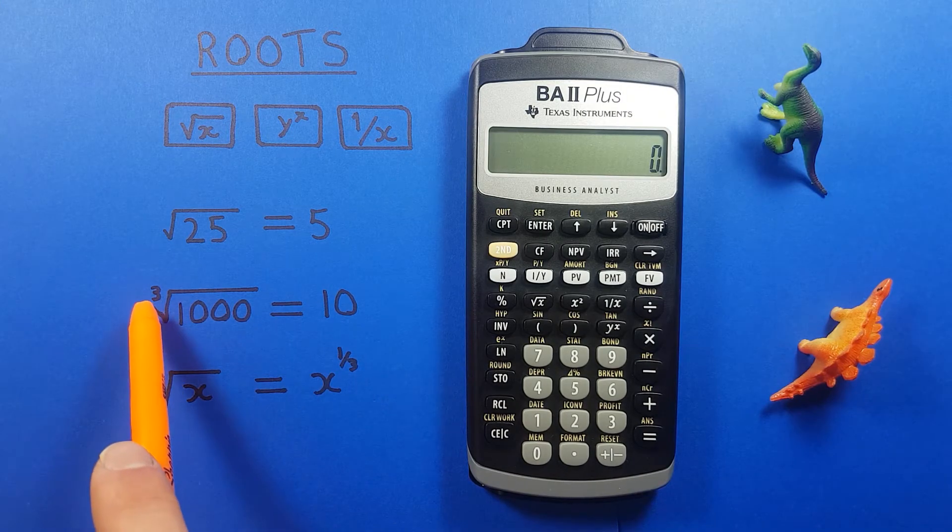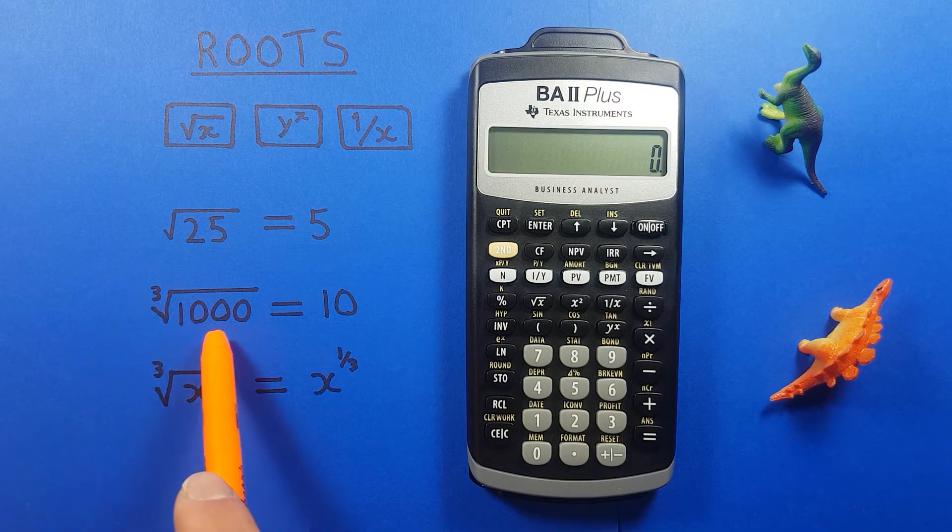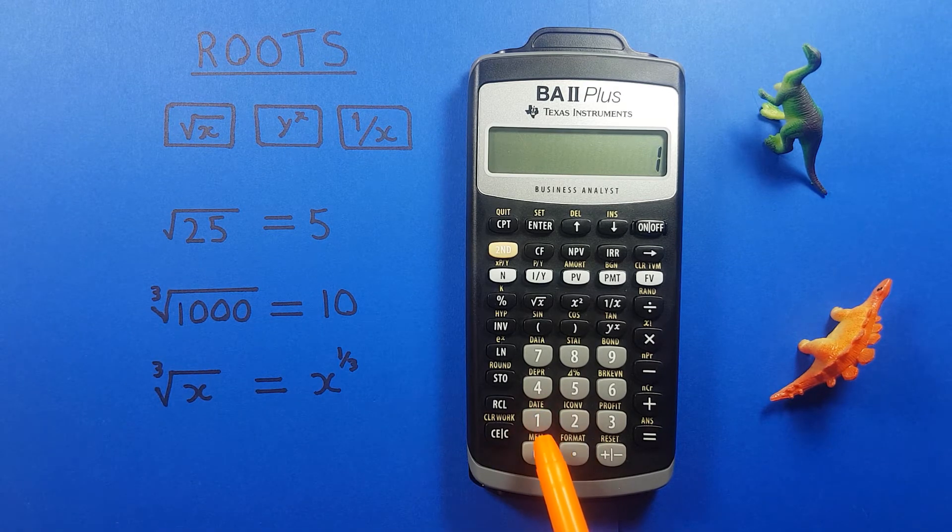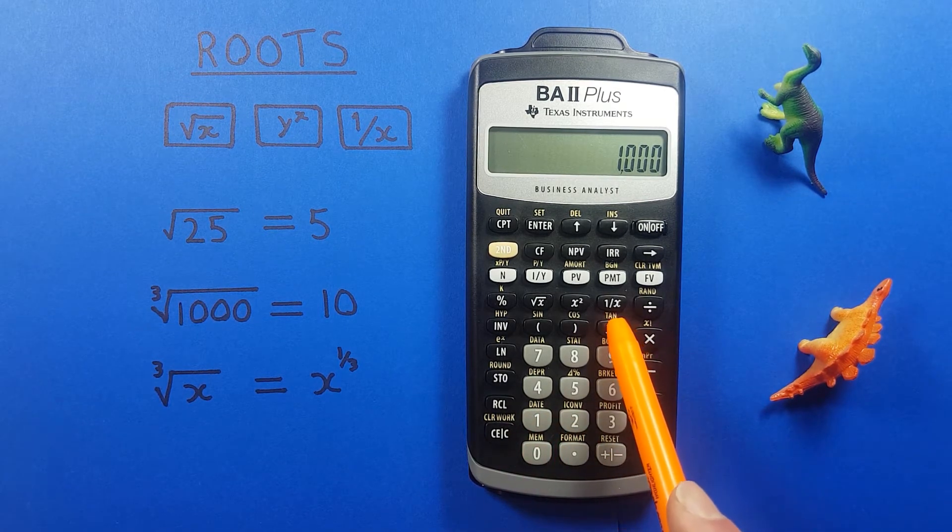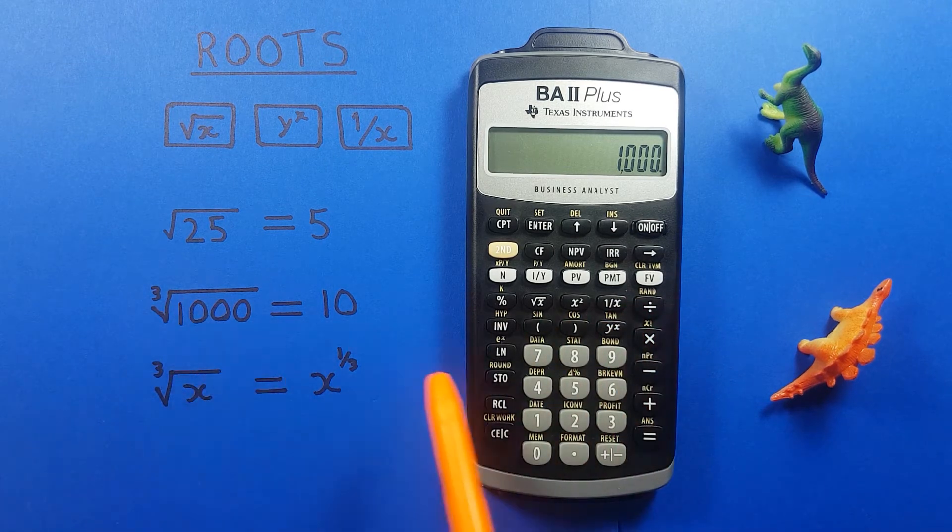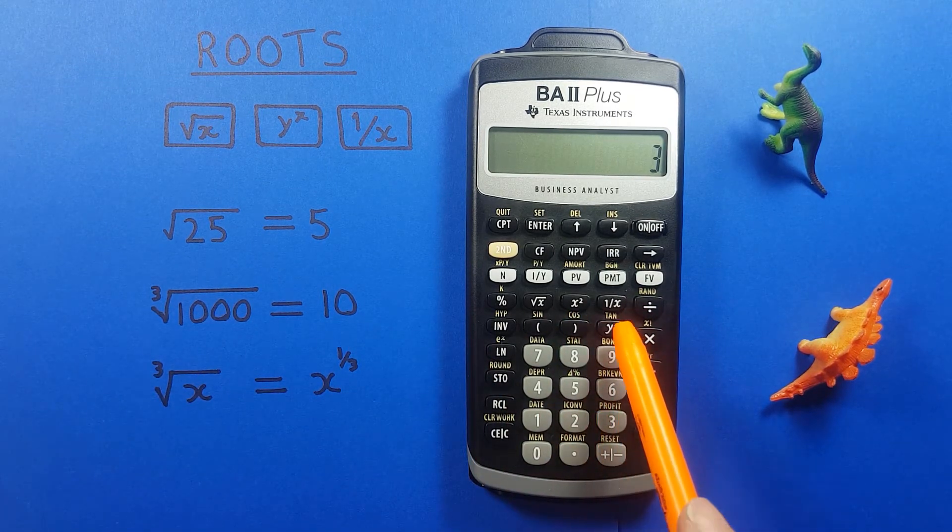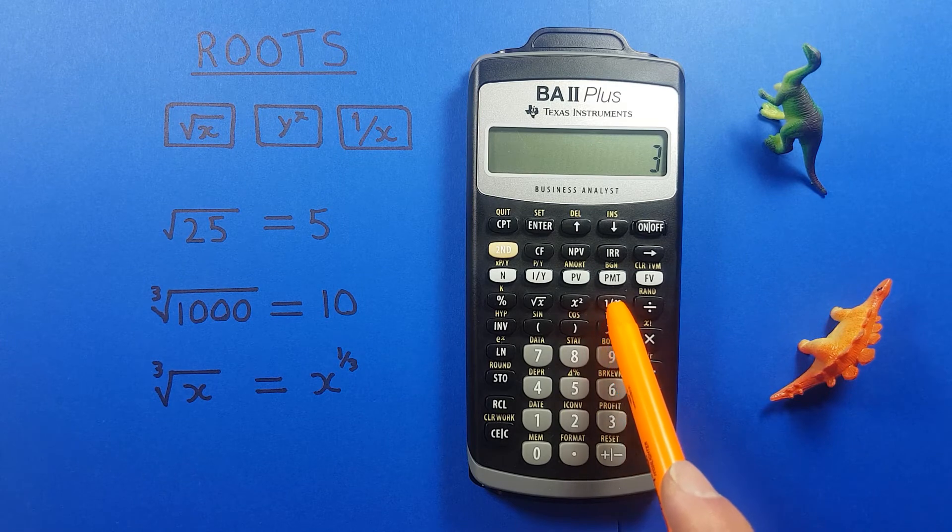So if we wanted to find the third root or cube root of 1,000, we could enter that 1,000 on the screen, press y to the x and then 3, and then before we press equals we press this 1 over x key here